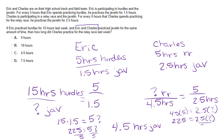We divide both sides by two and a half. Two and a half divided by two and a half is one, so that gives us 22.5 divided by 2.5, which equals nine. Charles spent nine hours practicing the relay race.